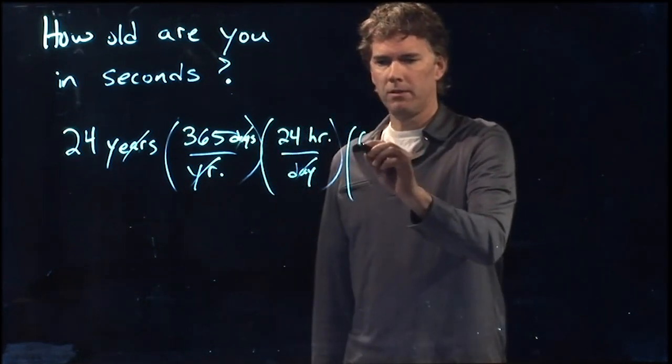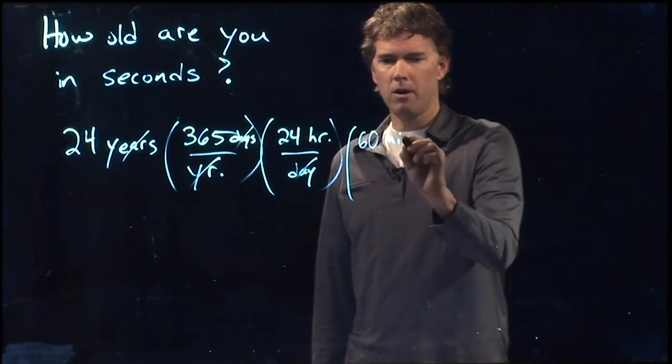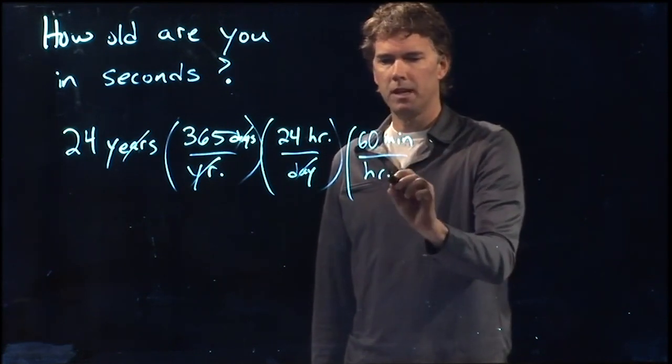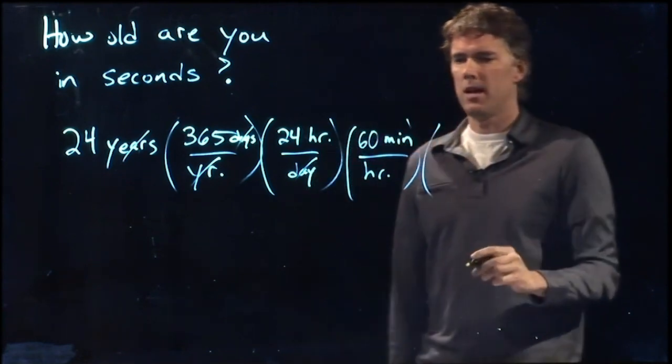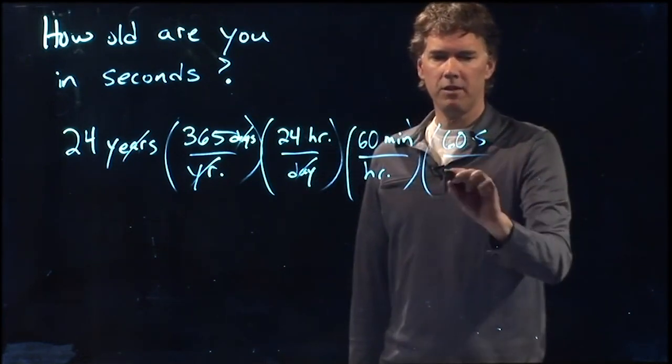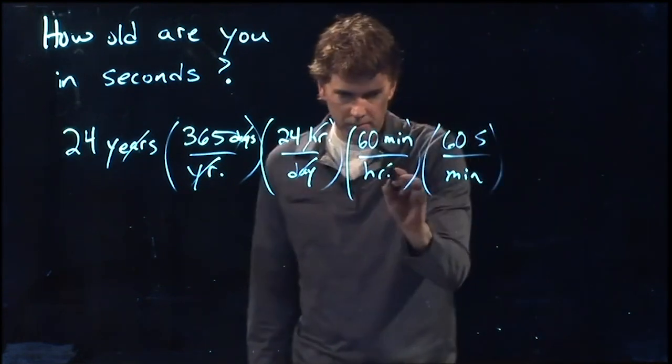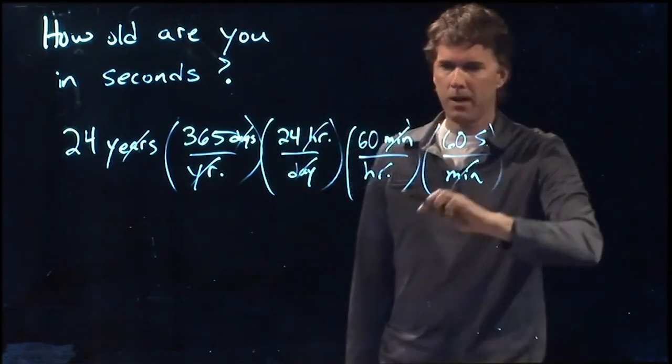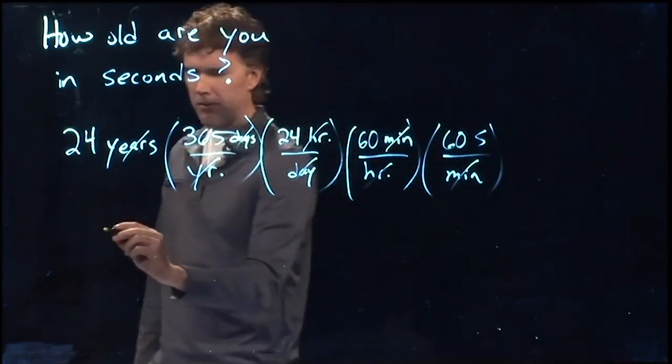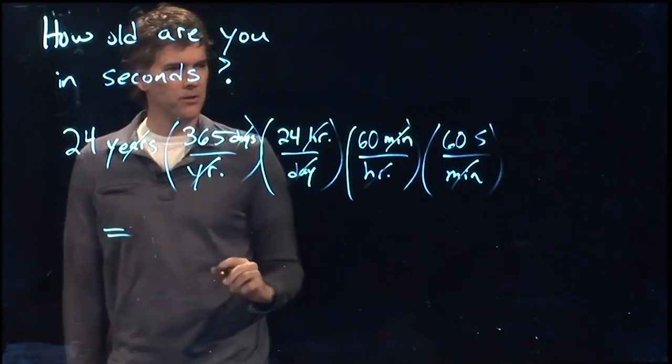How many minutes are in an hour? There are 60 minutes in an hour. And how many seconds in a minute? There are 60 seconds in a minute. So we get rid of hours, we get rid of minutes, and we end up with seconds. And now we just have a bunch of numbers to multiply. So let's multiply.